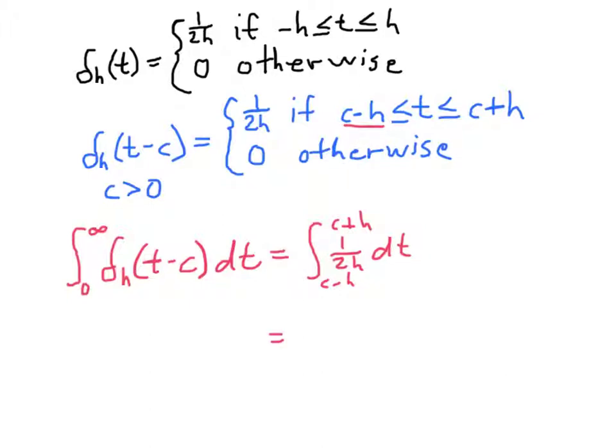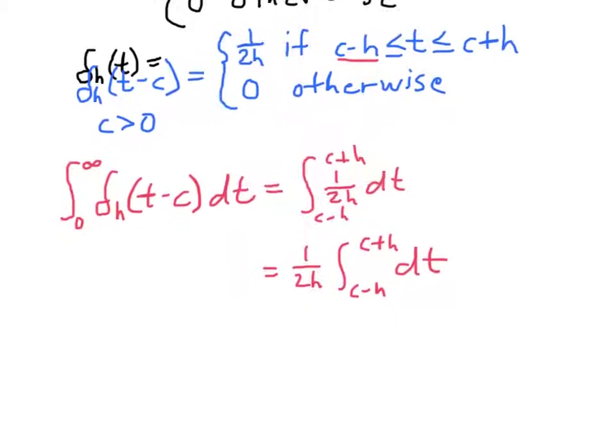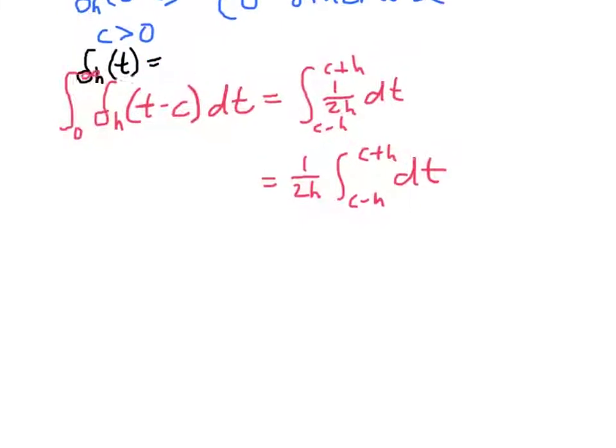And of course, the 1 over 2h is simply a constant, so we can bring it out in front. So we have 1 over 2h times the integral from c minus h to c plus h dt. And of course, the integral of dt,